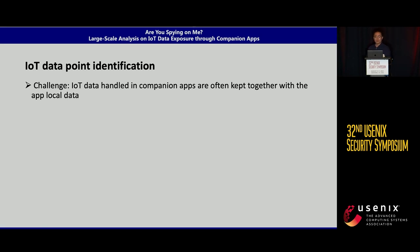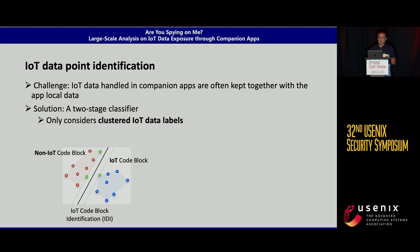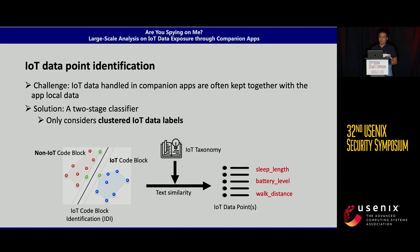The second module is about identifying IoT data points. The major challenge is that IoT data in apps is usually mixed with the app's local data, which creates noise. To overcome this, we adopt a two-stage classifier. In the first stage, a classifier identifies IoT code blocks, so we only analyze clustered text labels related to the IoT device. In the second stage, we identify the text labels in those code blocks and check whether they are close to data points in the IoT taxonomy, then report the real IoT data points.